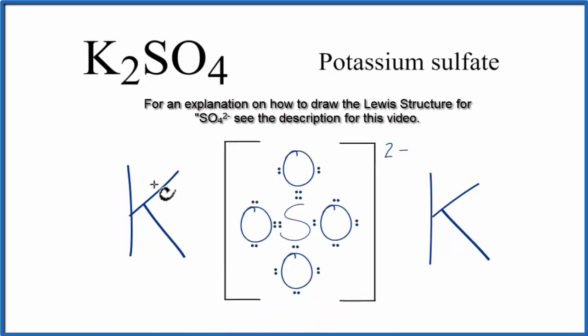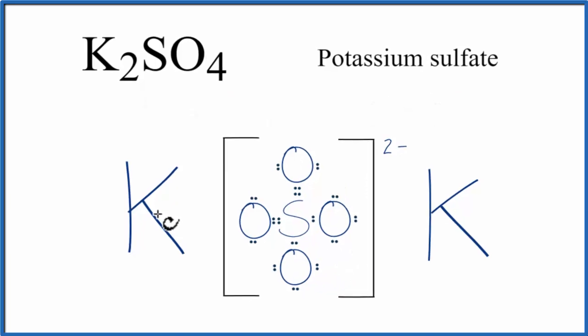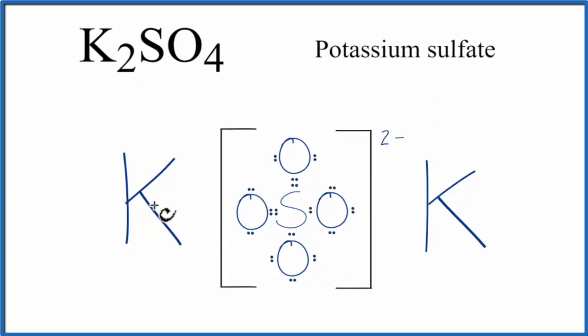So we said potassium was a metal, and this polyatomic ion, that's made up of nonmetals. Potassium, that's in group one on the periodic table. It has one valence electron.